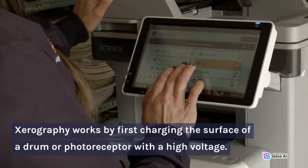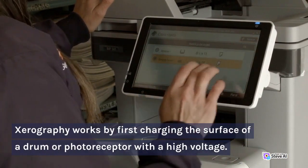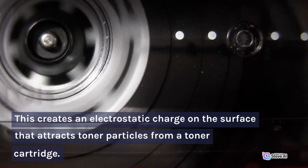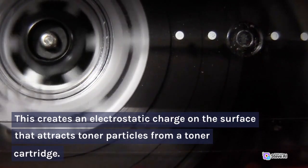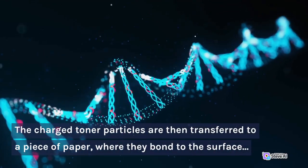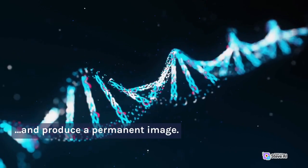Xerography works by first charging the surface of a drum or photoreceptor with a high voltage. This creates an electrostatic charge on the surface that attracts toner particles from a toner cartridge. The charged toner particles are then transferred to a piece of paper, where they bond to the surface and produce a permanent image.